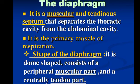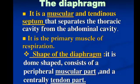The diaphragm is a sheet of internal skeletal muscle that extends across the bottom of the rib cage. It is a muscular and tendinous septum that separates the thoracic cavity from the abdominal cavity, and it is the primary muscle of respiration. It is dome-shaped, consisting of a peripheral muscular part and a central tendon part.